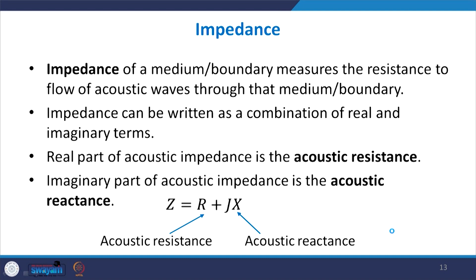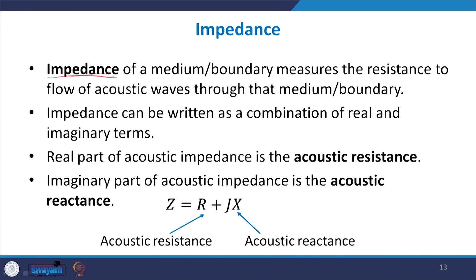The last quantity to define is impedance — a term also used in electrical technology. Impedance of any system is the resistance to flow. In acoustics, if we have any boundary or medium, the impedance gives us how resistant the boundary is to the flow of sound waves. Higher impedance means more reflection and fewer sound waves pass through because it is highly resistant to the flow of acoustic waves.